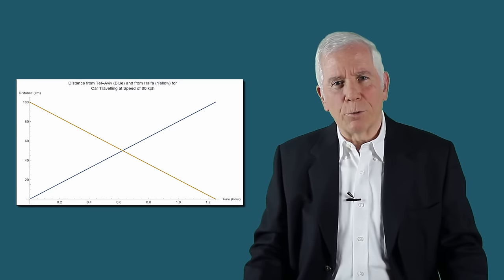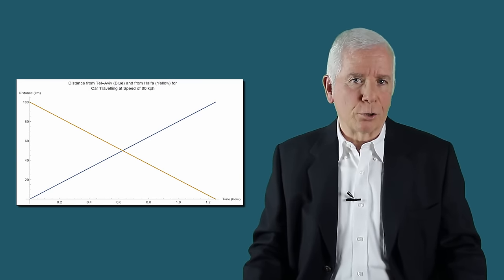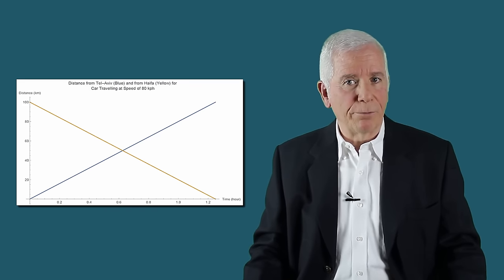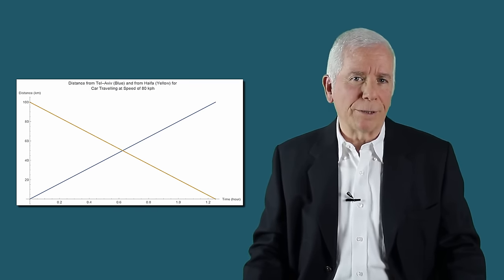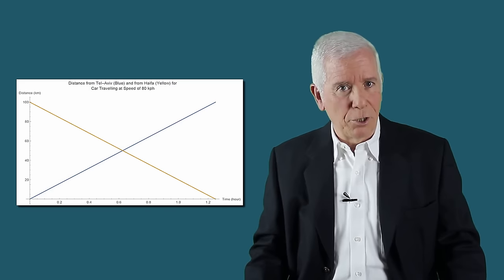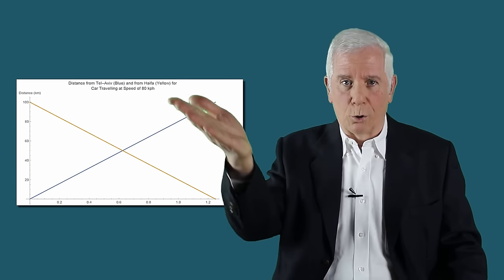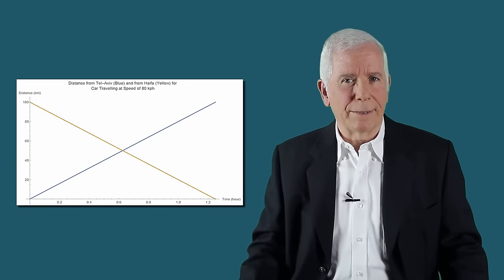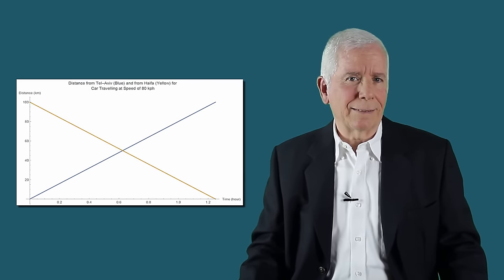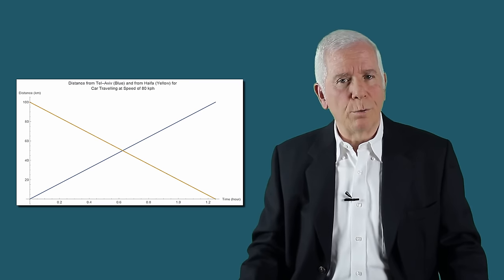This is true irrespective of whether the straight line is ascending or descending. For example, if I wish to determine the location as function of travel time of a car traveling at a constant speed from Tel Aviv to Haifa relative to its starting point, the line will be ascending. If the measurement will be relative to the destination, namely Haifa, the line will go down, descending. In both cases, it is clear that for a car moving at constant speed, distance and travel time measure the same thing, though on different scales.